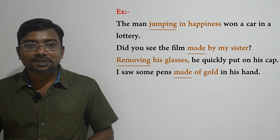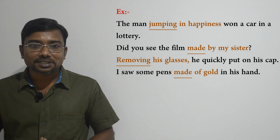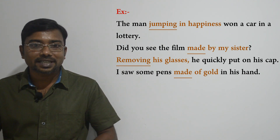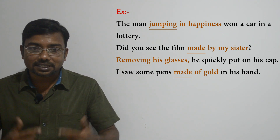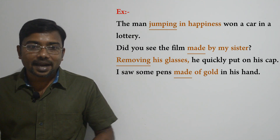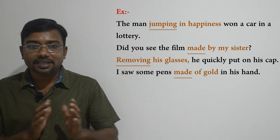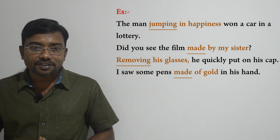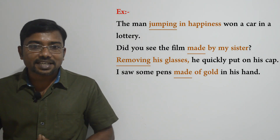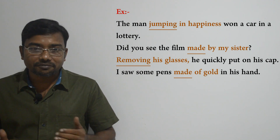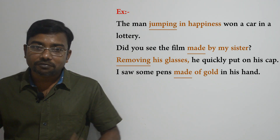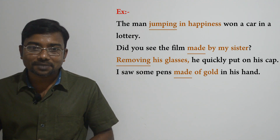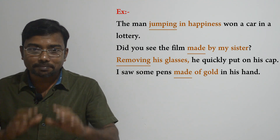Let's go through the second example: 'Did you see the film made by my sister?' Here, 'made by my sister' is the participle phrase because it begins with the participle 'made,' which is a past participle. It also stands directly after the noun 'film' to modify it. The entire phrase functions as an adjective — which film are we talking about? The film made by my sister.